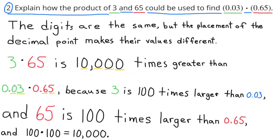Number 2: Explain how the product of 3 and 65 could be used to find 3 hundredths times 65 hundredths. The digits are the same but the placement of the decimal point makes their values different. 3 times 65 is 10,000 times greater than 3 hundredths times 65 hundredths, because 3 is 100 times larger than 3 hundredths and 65 is 100 times larger than 65 hundredths, and 100 times 100 is 10,000.